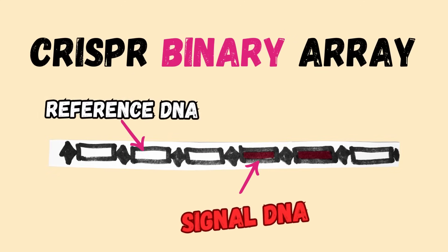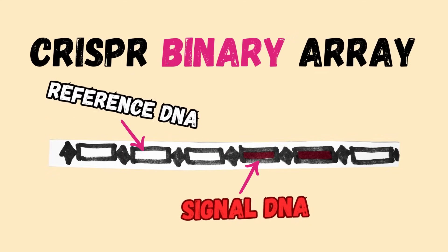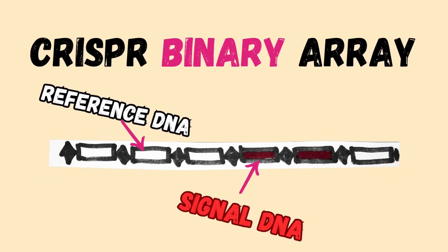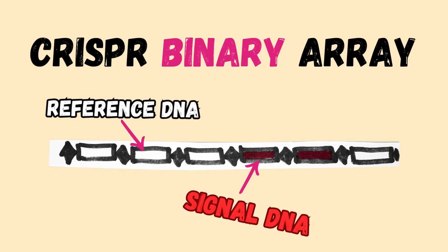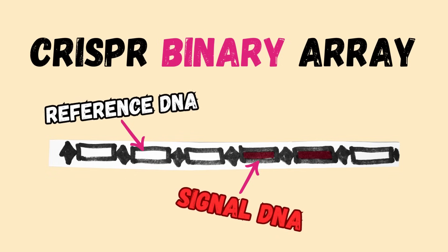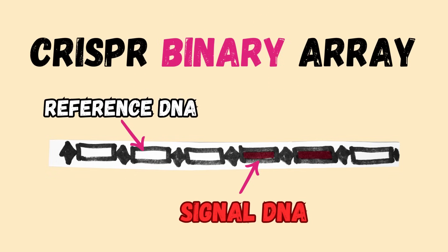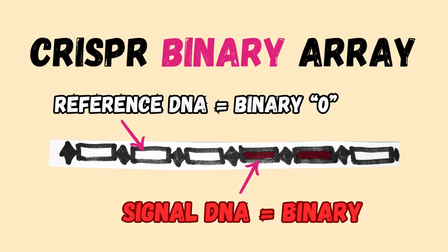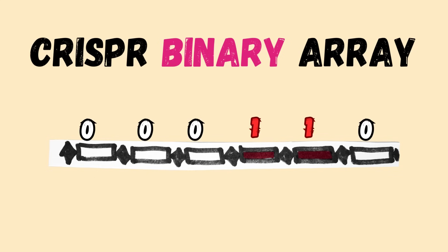Now imagine that instead of the invading viral DNA molecules, you feed this DNA array-forming machinery with two distinct strands of small DNA molecules to mimic a binary data system — one strand to represent a binary zero and the other one to represent a binary one. With that, you can encode zeros and ones on the bacterial DNA.